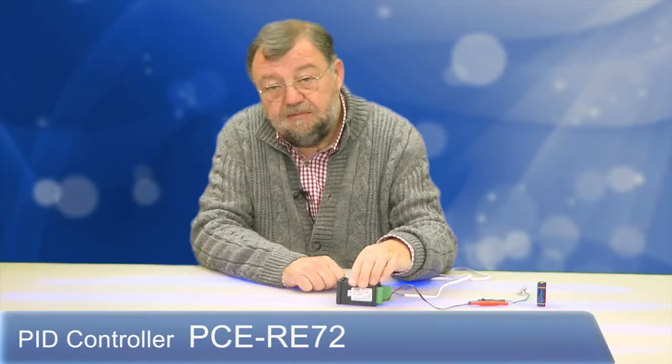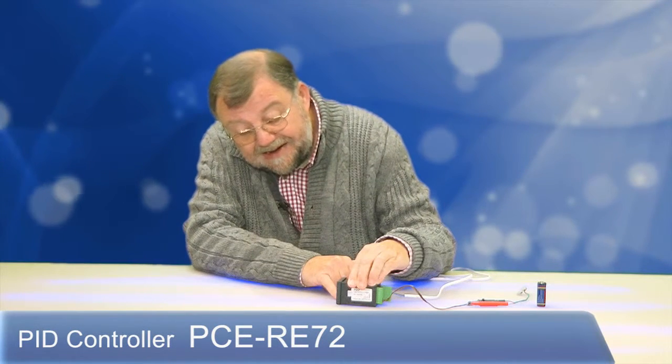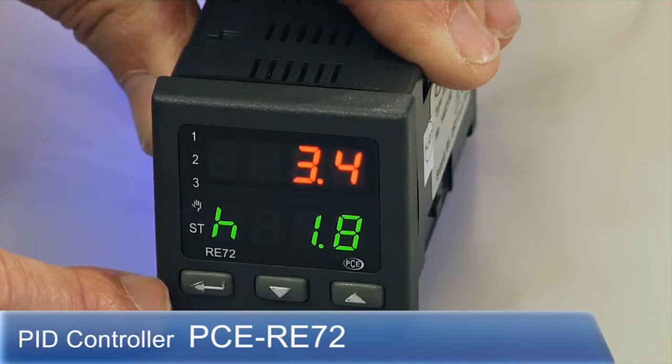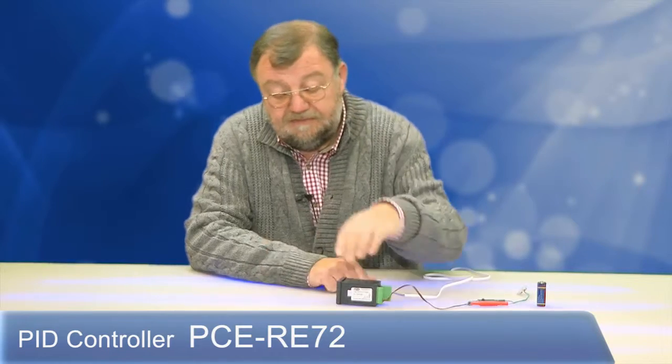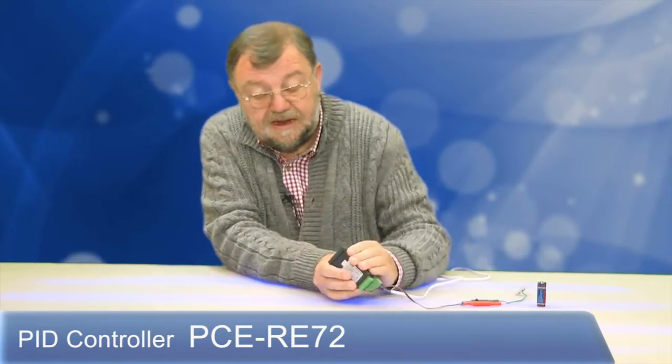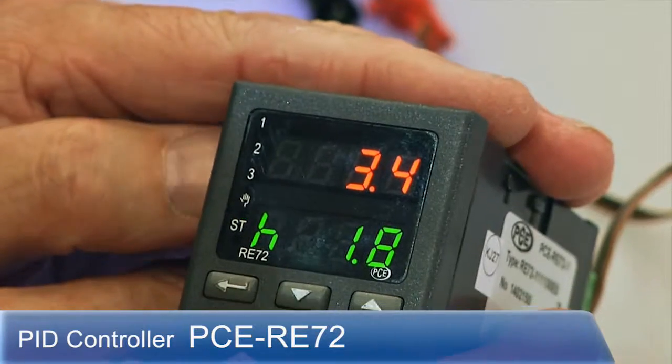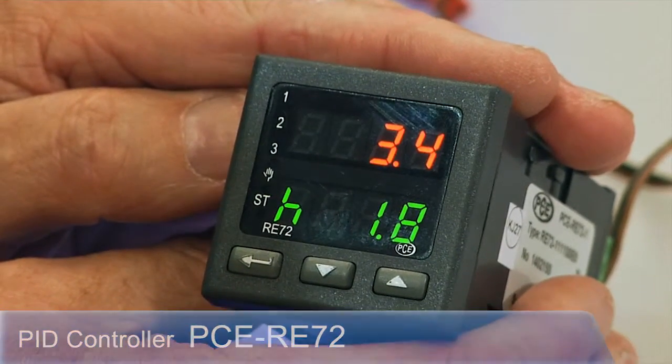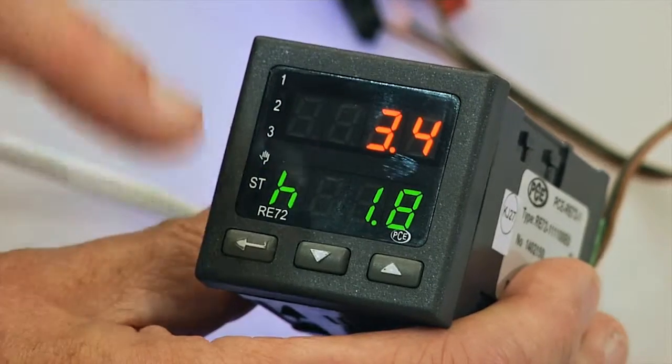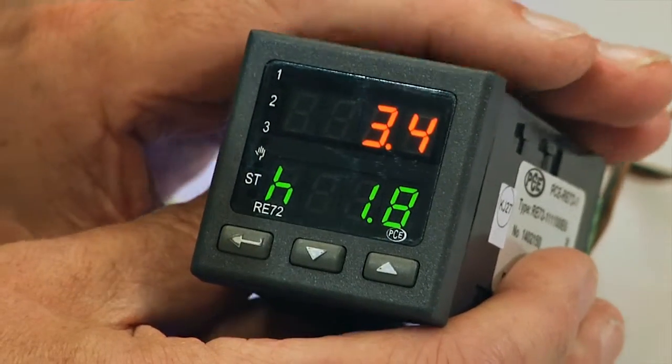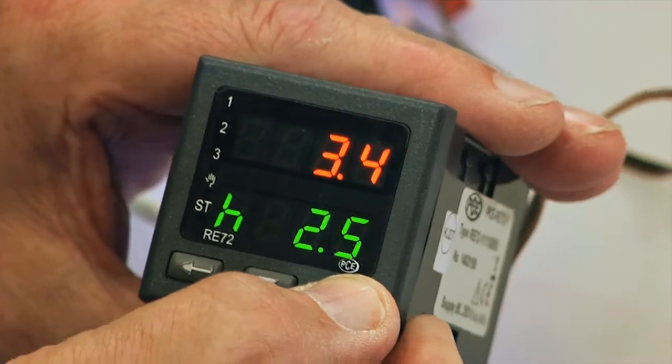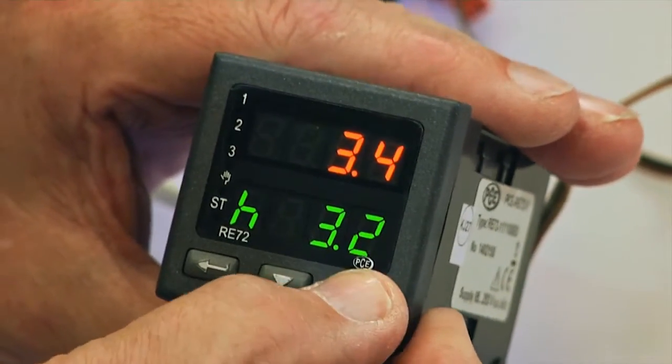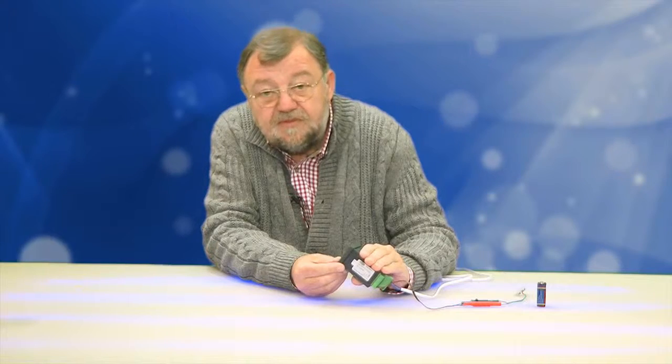Now I have here the PCE-RE72. This is also a highly complex device. Let's have a closer look at it. We have here two displays, seven segment, both four digits. At the top I have the actual value. Down here I have the should value, that I can naturally change and set. In this mode I am at the moment. I can store 15 different programs.